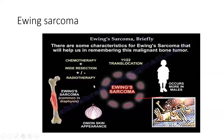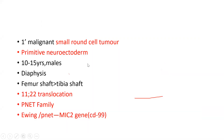Ewing's sarcoma is chemotherapy and radiotherapy sensitive. As soon as you give chemotherapy, everything melts like snow. So the treatment is chemo-radiotherapy — these round pandas melt like snow. Summary: 11;22 translocation (11 rooms, 22 students), males, onion skin, chemotherapy melts it.